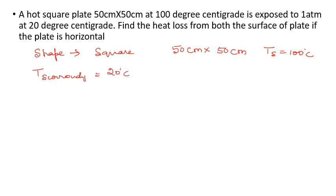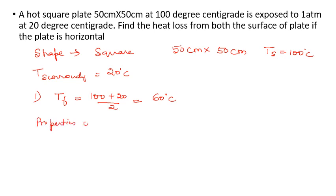As we have done in free convection problems, the first thing we have to do is find T_film. T_film = (100 + 20) / 2 = 120 / 2 = 60°C. So for the properties of air at 60°C, we are supposed to find them out.